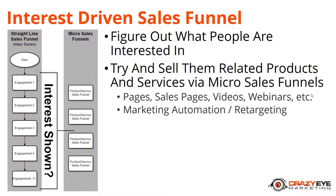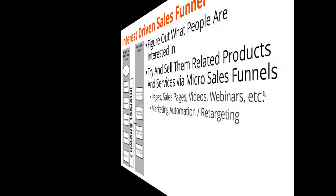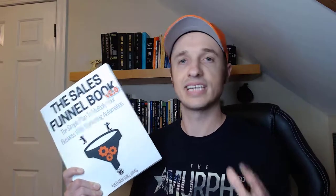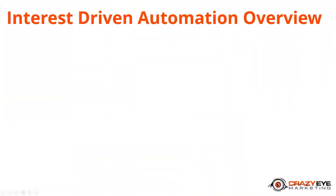That is the interest-driven sales funnel concept in a nutshell: figure out what people are interested in, then try and sell them related products and services via micro sales funnels. The micro sales funnels consist of pages, sales pages, videos, webinars, etc., and we move people through them with marketing automation and retargeting. Quick note: I have a special offer — a digital and audio copy of my book, 20 pre-written emails, and a seven-figure funnel template with training. Link in the description below.